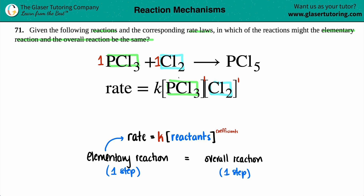Since the rate law is abiding by the coefficients, we know it's coming from the elementary step, which in this case can be the overall reaction. So, which of the reactions might have the elementary reaction and the overall reaction be the same? In this example, yes — it is the same. All you have to do is check the reaction and the rate law to see if it matches.